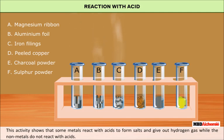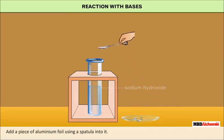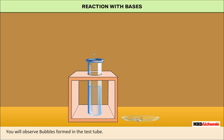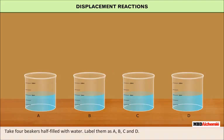Take a test tube containing a fresh solution of sodium hydroxide. Add a piece of aluminium foil using a spatula into it. You will observe that bubbles form in the test tube. Bring a burning matchstick near the mouth of the test tube — the gas burns with a pop sound. We conclude that metals react with bases to produce hydrogen gas.